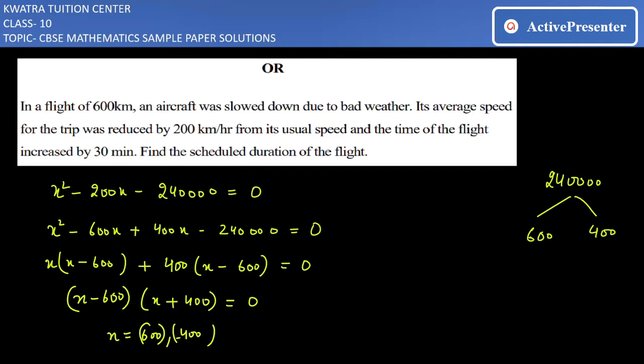So the usual speed will be x as 600 and reduced speed would be 600 minus 200, which is 400 km per hour.